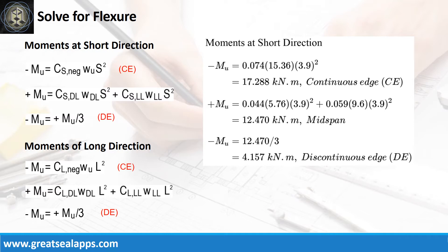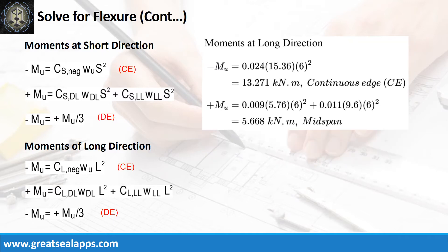Moments at short direction: negative moment at continuous edge is 17.288 kN·m; positive moment at mid-span is 12.47 kN·m; negative moment at discontinuous edge is 4.157 kN·m. Moments at long direction: negative moment at continuous edge is 13.271 kN·m; positive moment at mid-span is 5.668 kN·m.